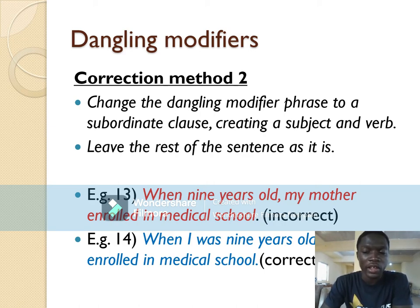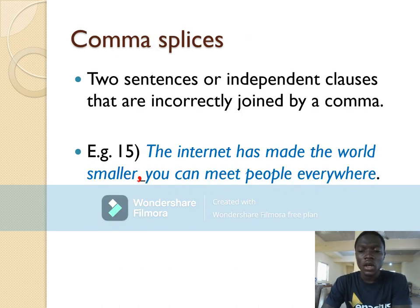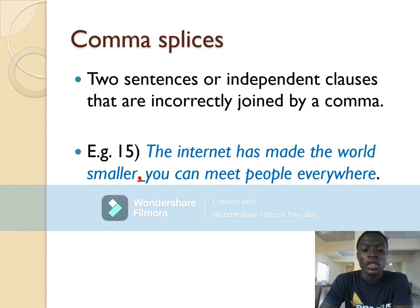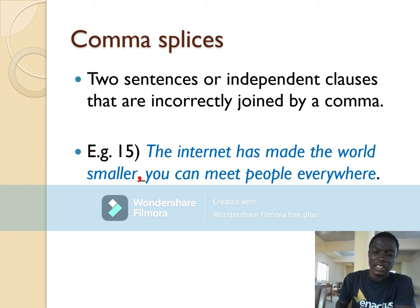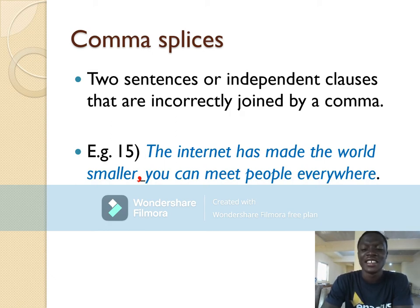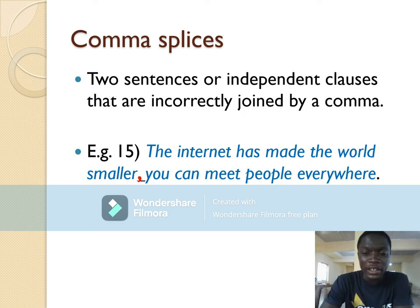The next deviant usage is the comma splice — two independent clauses incorrectly joined by a comma. This is a very common mistake in writing. Example: 'The internet has made the world smaller, we can meet people everywhere.' These are two independent clauses incorrectly joined by only a comma.